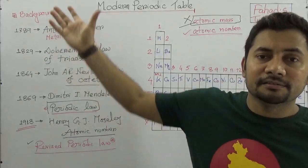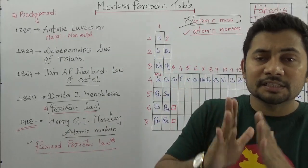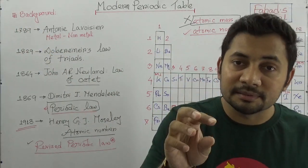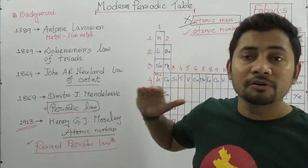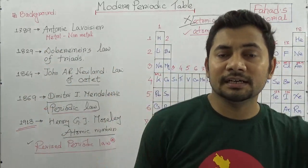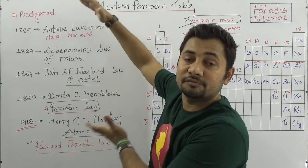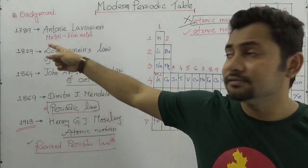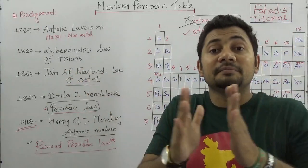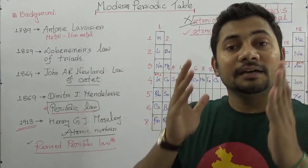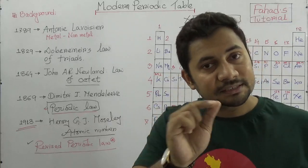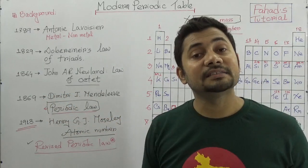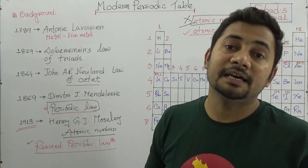This is only a brief overview of the history. If you dig deeper, there is a lot more information available through Google or articles. I just tried to cover what is in the book and the syllabus, so the information here is limited. To summarize the five key inventions: in 1789, Antoine Lavoisier divided elements into metals and non-metals; in 1829, Döbereiner proposed the Law of Triads; in 1864, John A. R. Newland proposed the Law of Octaves; and in 1869, Dmitri Ivanovich Mendeleev, considered the father of the periodic table, introduced the periodic law.